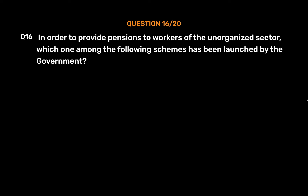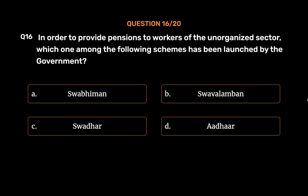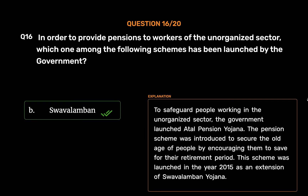Question No. 16: In order to provide pensions to workers of the unorganized sector, which one among the following schemes has been launched by the government? Option A, Swabhiman; Option B, Swavalamban; Option C, Swadhar; Option D, Aadhar. The correct answer is Option B, Swavalamban. To safeguard people working in the unorganized sector, the government launched Atal Pension Yojana, introduced to encourage saving for retirement. This scheme was launched in 2015 as an extension of Swavalamban Yojana.